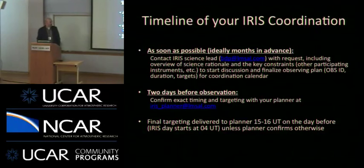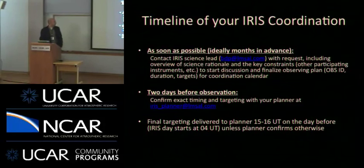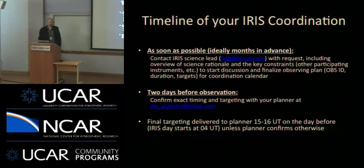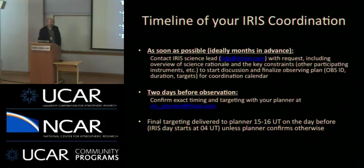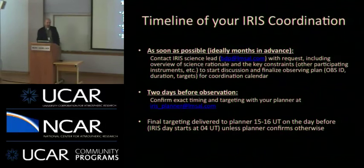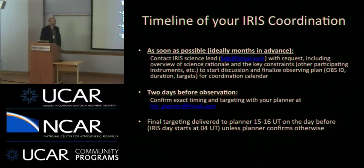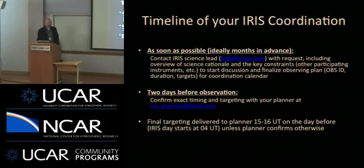If you've decided you need IRIS data, here's a timeline. First, contact the IRIS science lead, Bart, with your request — an overview of the science, key constraints, what other instruments you need to coordinate with, and a broad idea of the observations needed. That should be done as soon as possible, ideally two months in advance. Members of the IRIS science team will help refine your observing plan. About two days before the observation, get in touch with the IRIS planner at the general mailing list address to finalize observations and pick a final target.